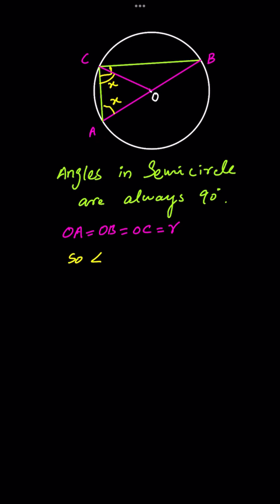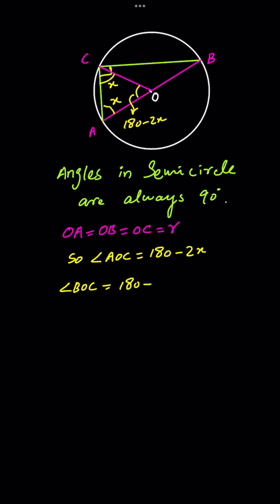Angle AOC is equal to 180 minus 2x, because the sum of the angles of a triangle is always equal to 180. So this angle is 180 minus 2x. The sum of both of these angles is equal to 180 degrees. So angle BOC is equal to 180 minus (180 minus 2x), which gives us 2x.